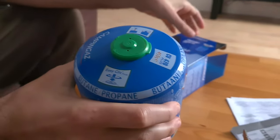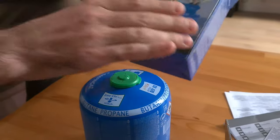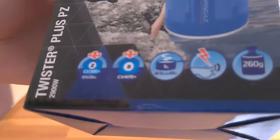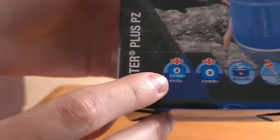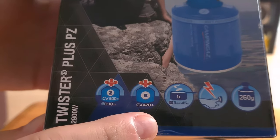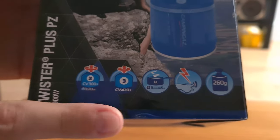Okay, so this is the gas cylinder. As you can see, this particular device will work with CV 300 plus and CV 470. The one that we have here.